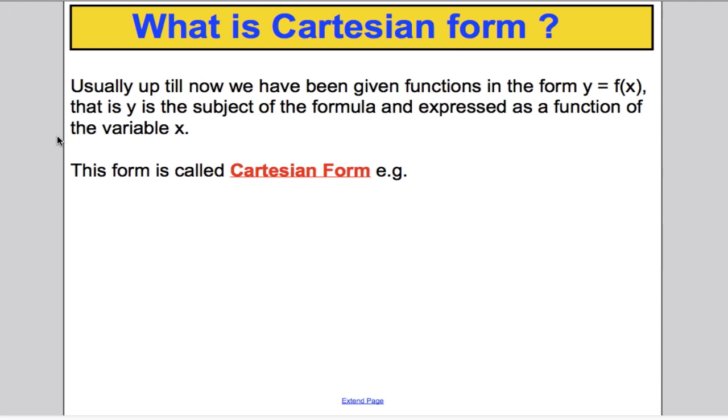What is Cartesian form? Usually up to now we've been given functions in the form y equals f of x. So y was the subject of the formula and it was expressed as a function of the variable x. That was called Cartesian form. For example, y equals x squared plus 3x subtract 1 was a Cartesian form. There are only y's and x's in it.